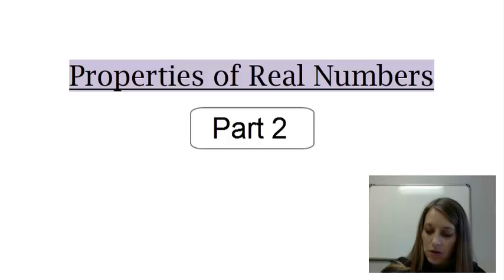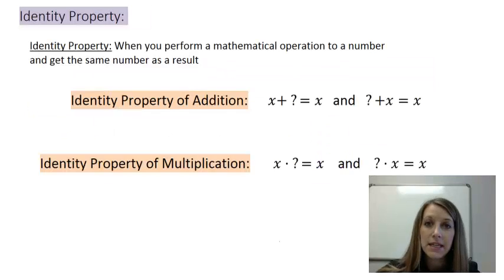Two more properties left to go. The first one is the identity property. The identity property is when we perform a mathematical operation to a specific number and we get that exact same number as a result. We have an identity property of both addition and multiplication, but it works the exact same way. I need to perform that math operation to x and work it out so I get the exact same number as a result, meaning x.